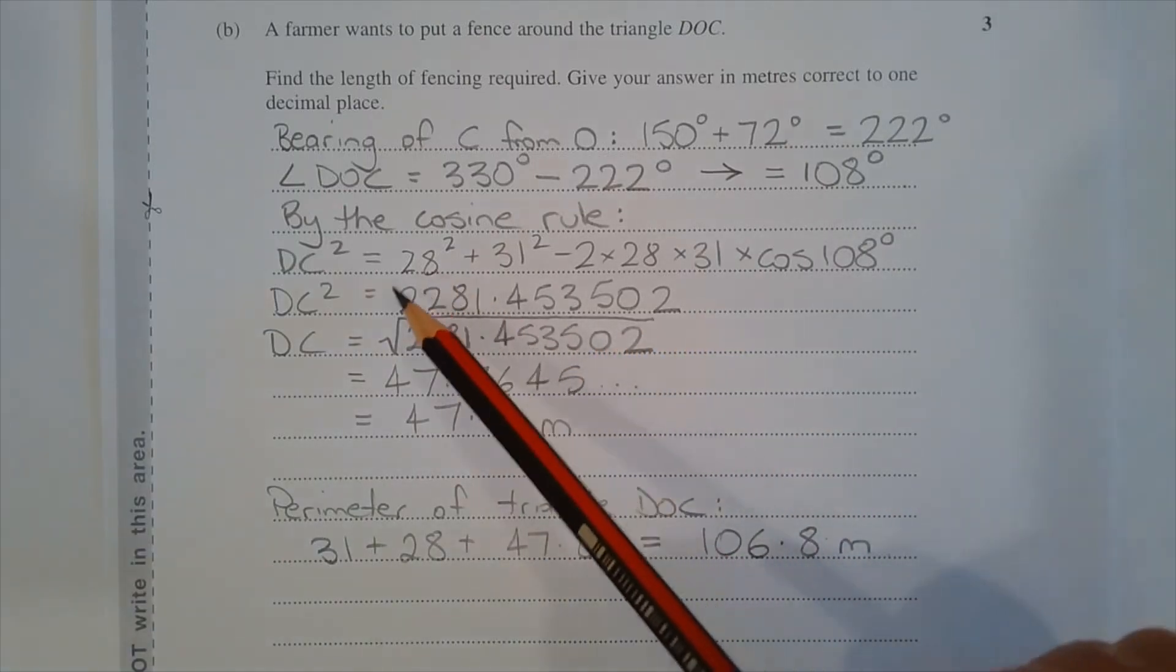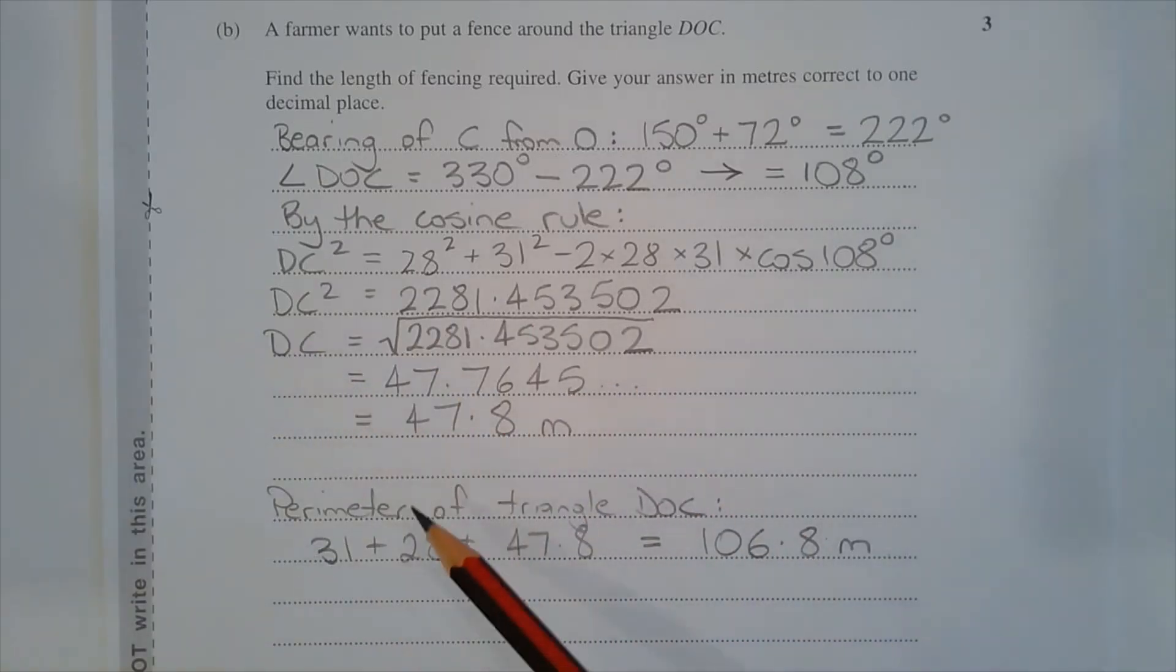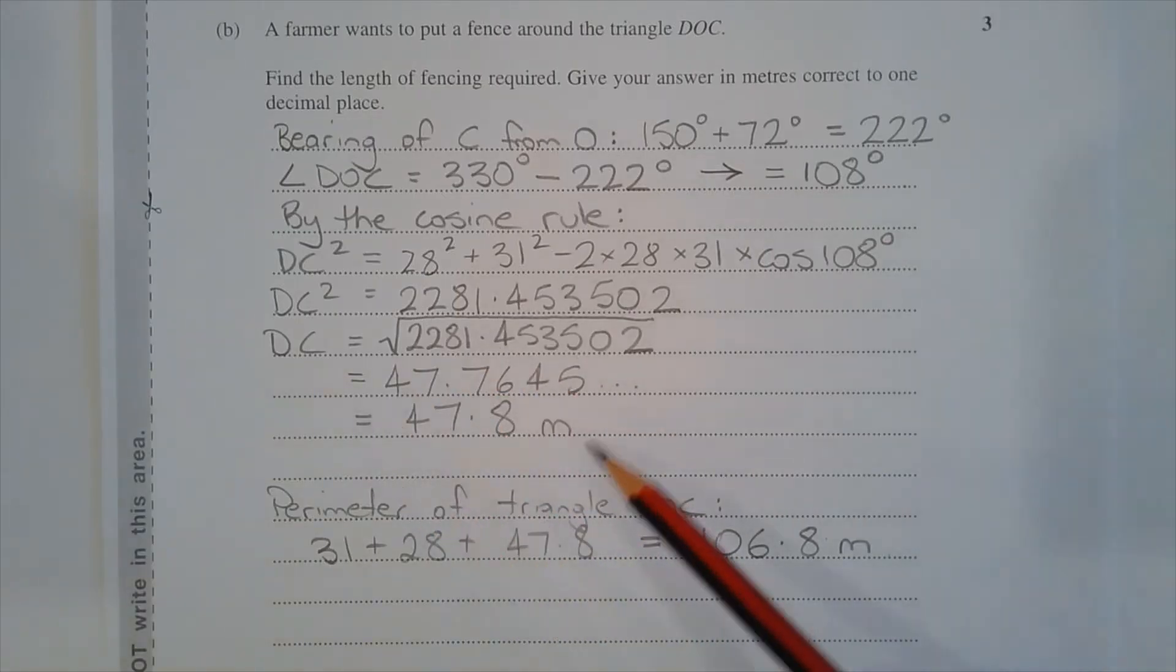And taking the square root of the right hand side, DC is equal to 47.7645 and so on metres. And rounding this value to one decimal place, that equals 47.8 metres.